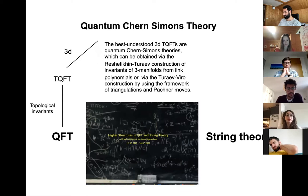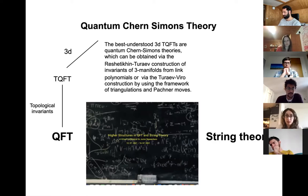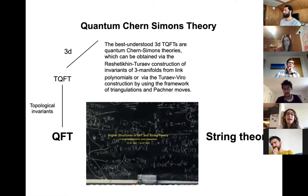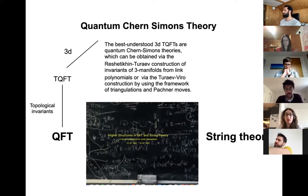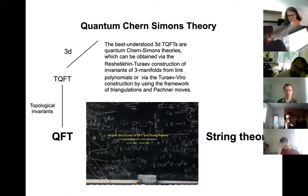The particular type of TQFT we consider is the three-dimensional one, which has a connection to the quantization of Chern-Simons theory. Chern-Simons theory is indeed the best-understood type of two-dimensional — I mean three-dimensional — TQFT, and it can be obtained through the Reshetikhin-Turaev construction or via the skein theory construction. I'm just mentioning these keywords in case they connect with your research.